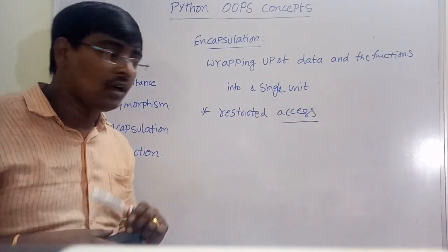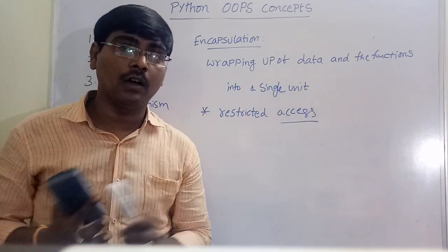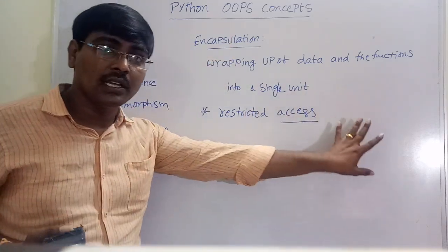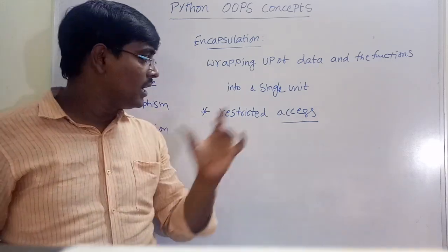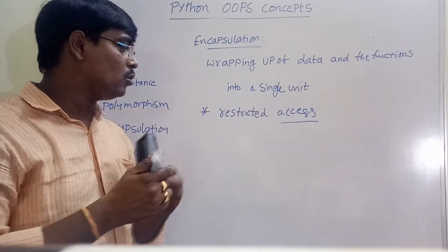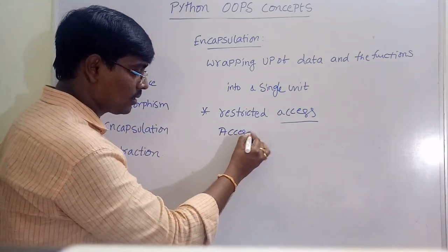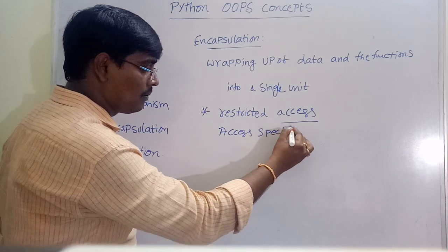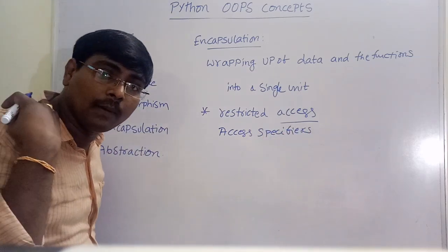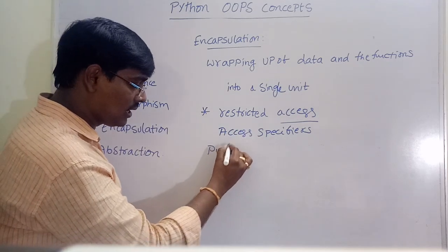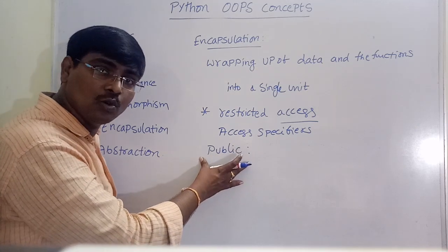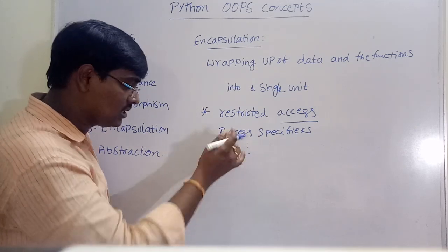We cannot directly access each and every member of the class. Encapsulation provides restricted access to the members of a class. This restriction is provided using access specifiers. The access specifiers are: public — any code outside the class can access; private —